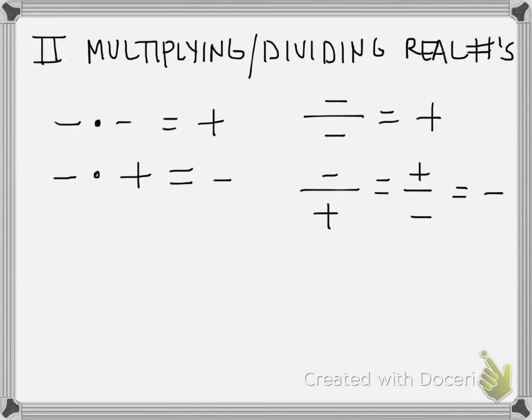If I was to multiply an odd number of negatives — one, three, five, seven, nine — it's always going to give me a negative number.